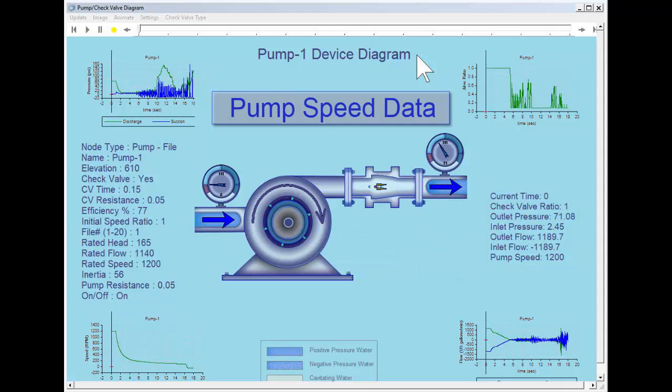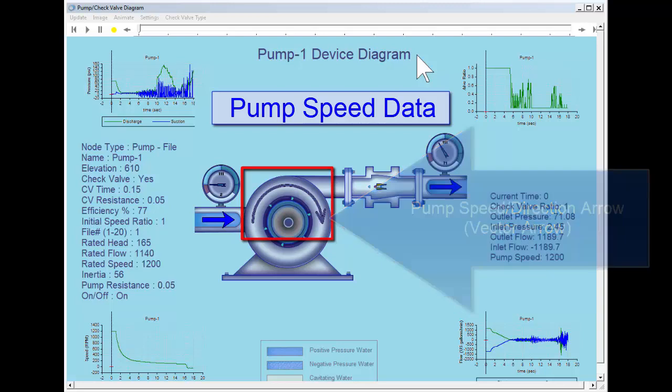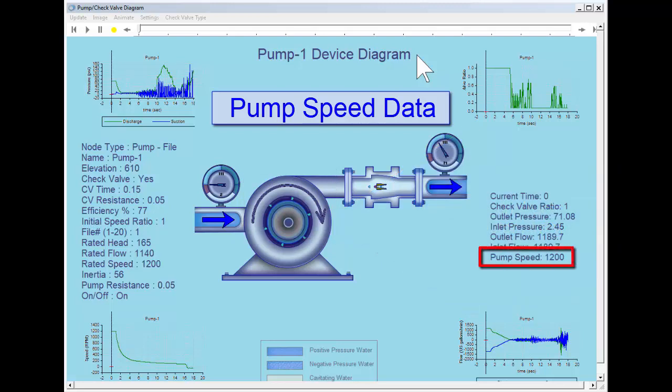Pump speed data is shown as a vector arrow on the pump itself with a numerical readout and graphically.